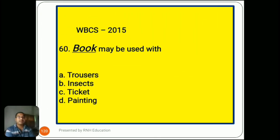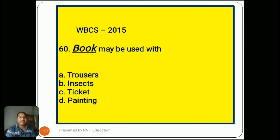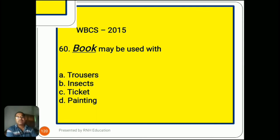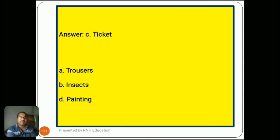Question number 60, from 2015: 'Book may be used with...' Options are A) trousers, B) insects, C) ticket, D) painting. The right answer is C) ticket, because we say 'book a ticket.' Options A (trousers), B (insects), and D (painting) are not appropriate collocations with 'book.'